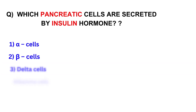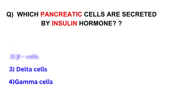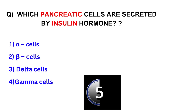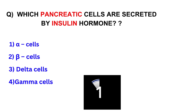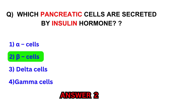Which pancreatic cells secrete insulin hormone? Alpha cells, beta cells, delta cells, or gamma cells. Answer: Beta cells.